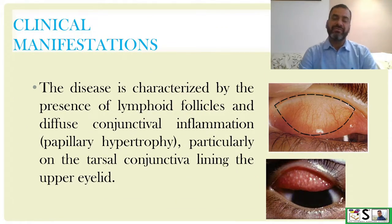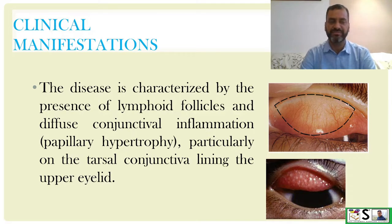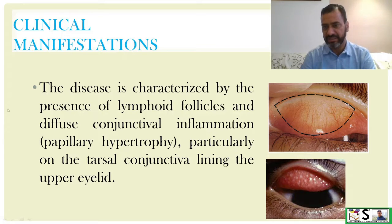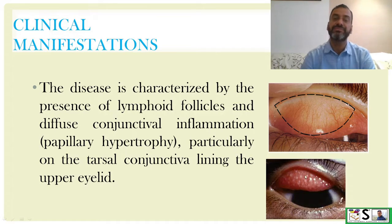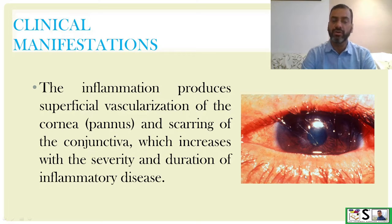Clinical manifestations. The disease is characterized by the presence of lymphoid follicles and diffuse conjunctival inflammation in the eyes. Papillary hypertrophy, particularly of the tarsal conjunctiva lining of the upper eyelid — here you can see the upper eyelid is mainly affected. The inflammation produces superficial vascularization of the cornea, that is pannus, and severe redness.